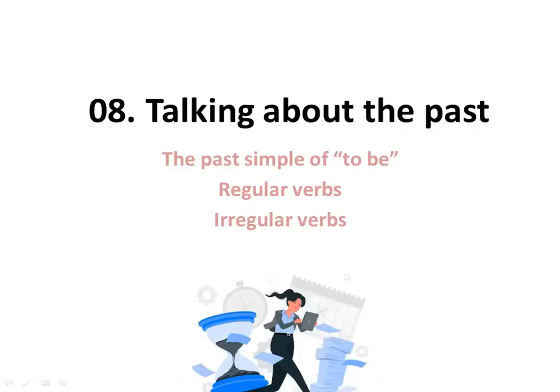Hello everyone, and welcome! In today's lesson we will talk about the past. We will see how to talk about the past in English — the past simple of the verb 'to be' (negative and question), some regular verbs, and irregular verbs. Let's start.